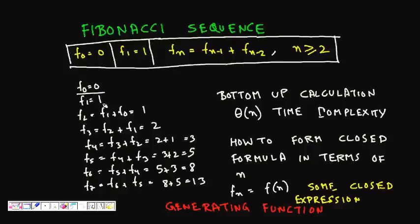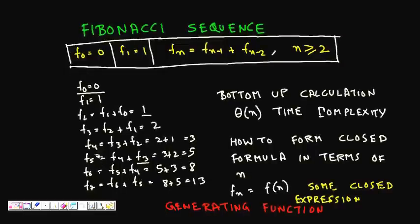Starting from F(0)=0 and F(1)=1: F(2) = F(1)+F(0) = 1, F(3) = F(2)+F(1) = 2, F(4) = F(3)+F(2) = 3, F(5) = F(4)+F(3) = 5, F(6) = F(5)+F(4) = 8, F(7) = F(6)+F(5) = 13. To find F(n) we go bottom-up, requiring a code that runs in Θ(n) time.